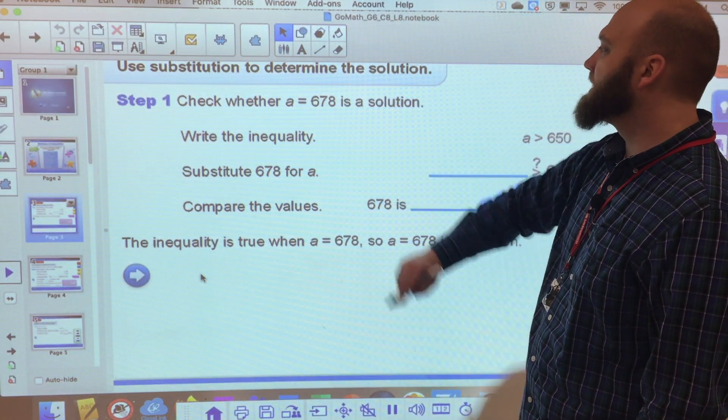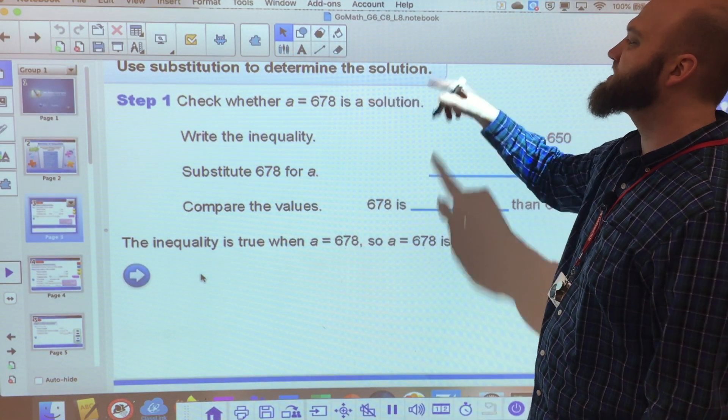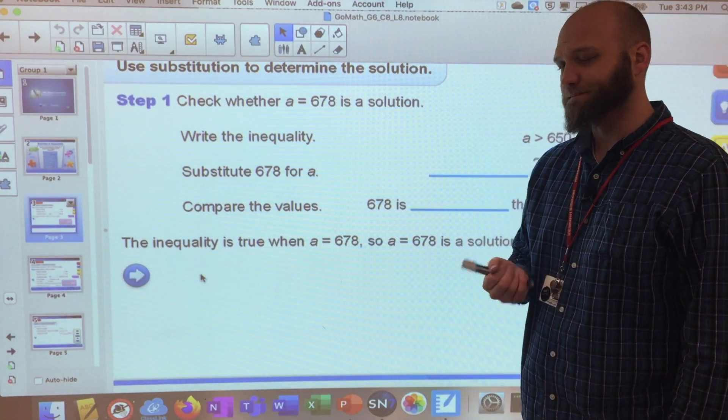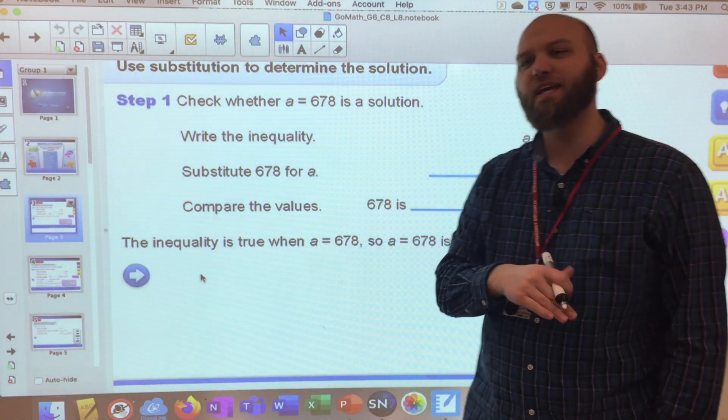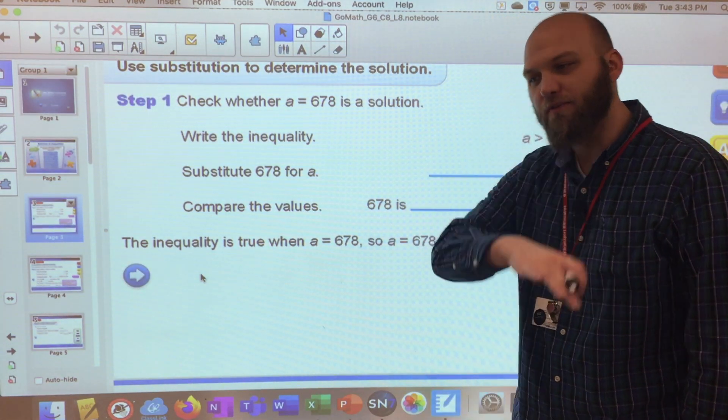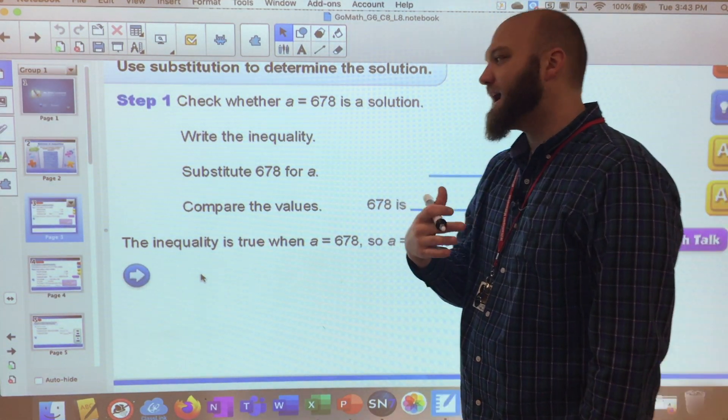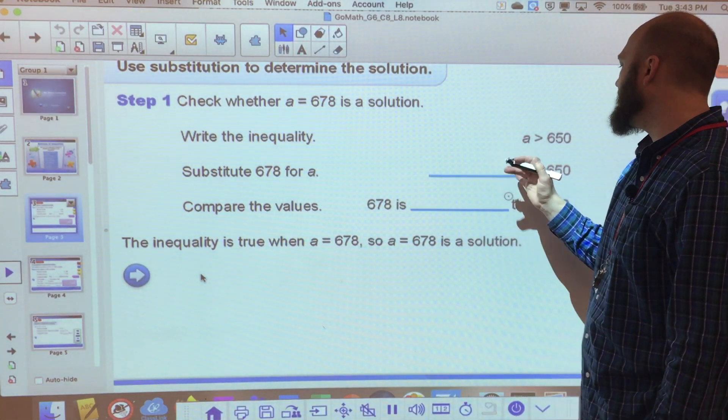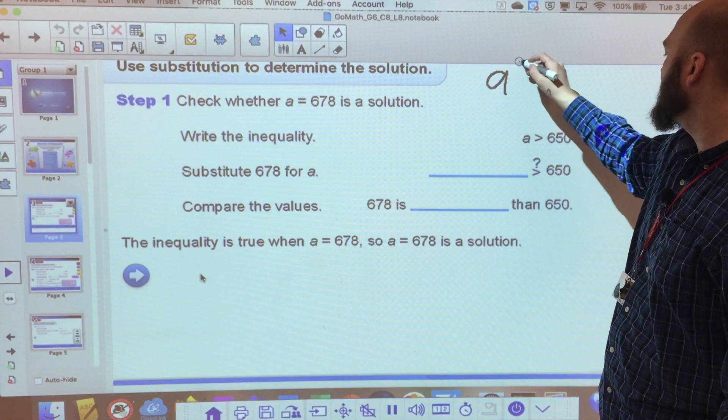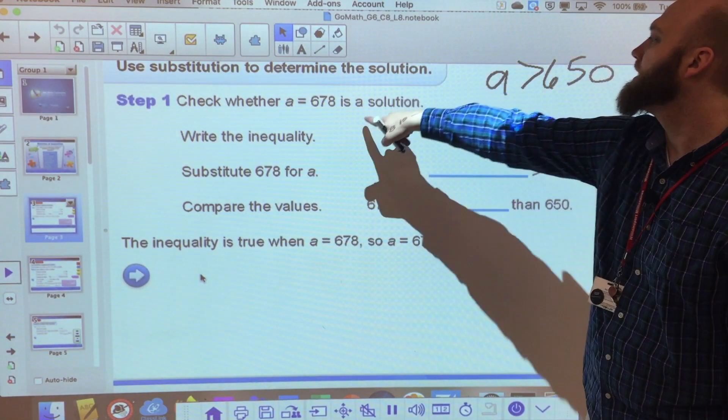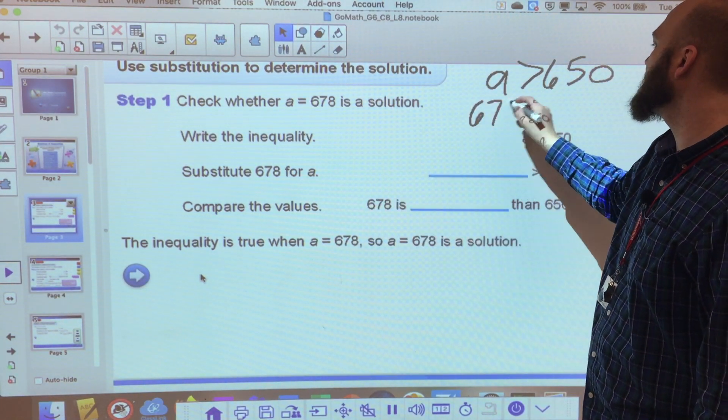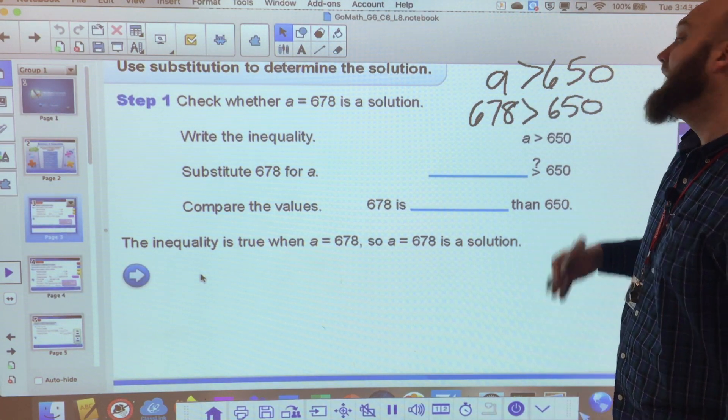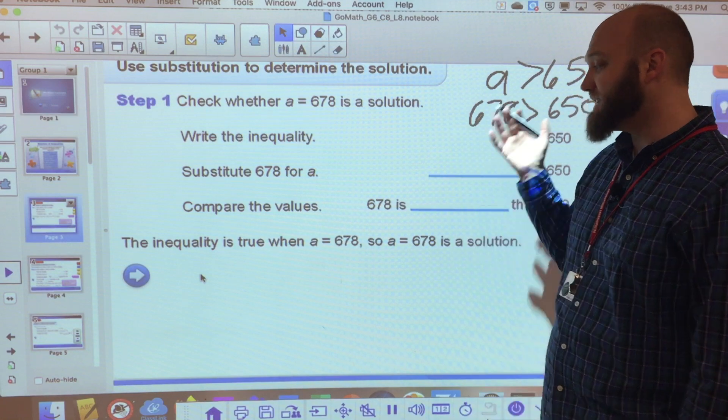Write the inequality. So check whether A equals 678 is a solution. So A equals 678. Simple enough. Just like I did with my other problems when I have something like substitute 678 for A. So if A is greater than 650, is 678 greater than 650? Yes, it is. So it is true.